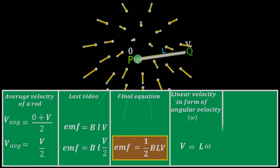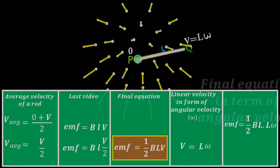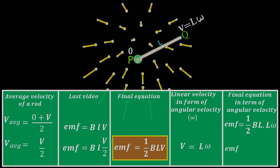Now, in the equation of EMF, ½BLV, when we put linear velocity V in the form of angular velocity ω, that is V is equal to Lω. We got our final equation of EMF induced in a rotating rod, which is equal to ½BL²ω.